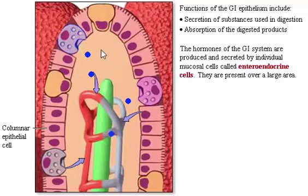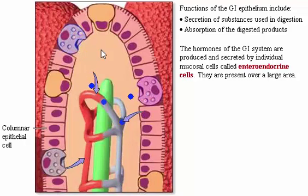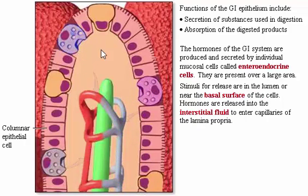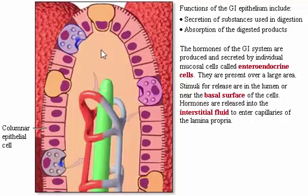The hormones of the GI system are produced and secreted by individual mucosal cells called enteroendocrine cells. They are present over a large area. Stimuli for release are in the lumen or near the basal surface of the cells. Hormones are released into the interstitial fluid to intercapillaries of the lamina propria and are not released into the lumen of the GI tract.